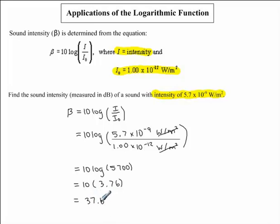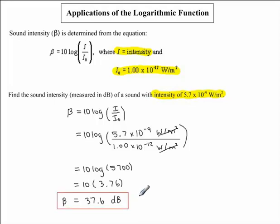37.6 represents our sound intensity, or beta, which is measured in decibels — so we include our units. That is our final answer: 37.6 decibels. For those of you in physics and chemistry class, check your textbook for the rules on significant figures when working with logarithmic functions.